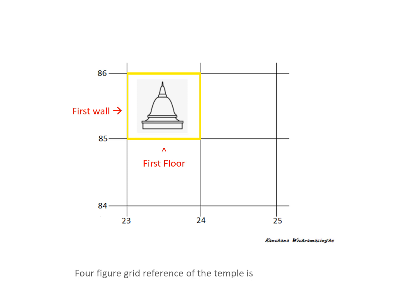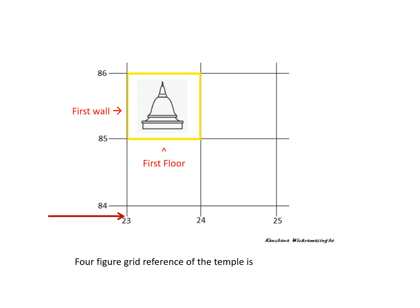The southwest corner point is what you consider when giving the four-figure reference. So what is the four-figure grid reference of the temple? There's a small trick: you walk along the corridor until you get to the first wall of the square of interest, which is 23, and you climb up the stairs until you get to the first floor, which is 85. So the four-figure grid reference of the temple is 2385.